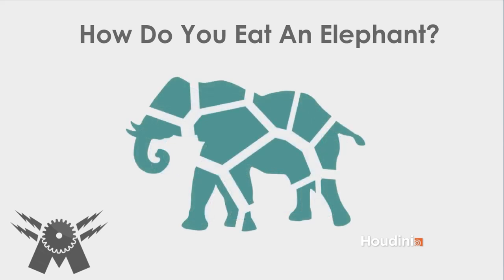Well, obviously, one step at a time. This is so obvious as to almost not bear mentioning, but it's super important to not get overwhelmed by the sheer quantity of stuff you have to learn. Just like eating an elephant, which you eat one bite at a time, learning Houdini, you have to learn one step at a time. So don't freak out and be overwhelmed by the amount of stuff you have to do.